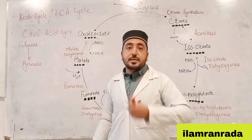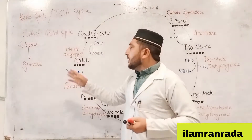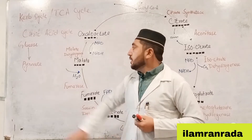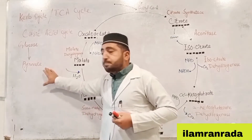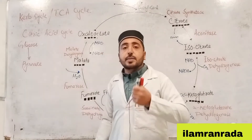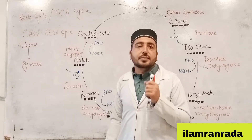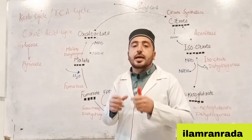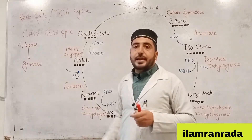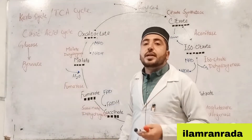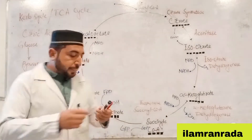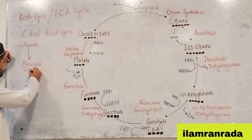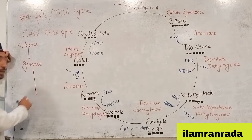Students, the pyruvate from glycolysis goes into the Krebs cycle via the link reaction. Remember that the Krebs cycle and glycolysis are connected through this link reaction — pyruvate is not a direct step but passes through the link reaction first.